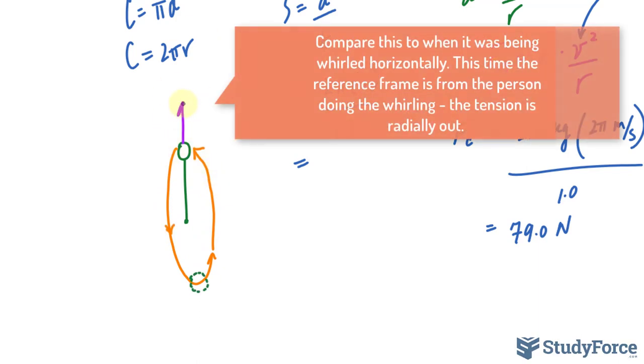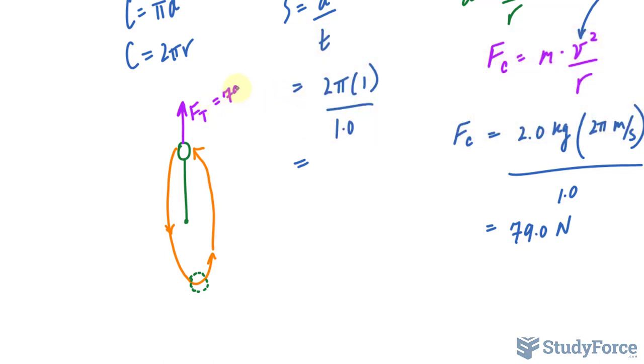Now at the top, the tension is what we calculated. It's going in this direction. We called it fc, but for reference sake, let's just call it ft for tension. And it is 79.0 newtons. There is a force due to gravity that we need to consider. That's f sub g. And that can be found by taking the mass of the object and multiplying it by 9.8 meters per second squared. So the mass of the object was 2.0 times 9.8, and that gives us 19.6 newtons.